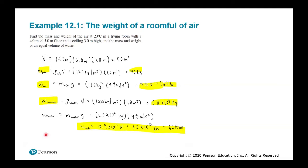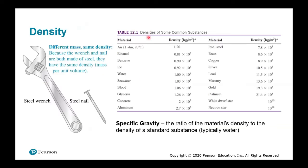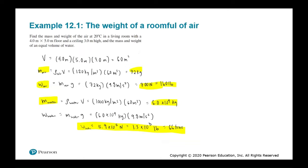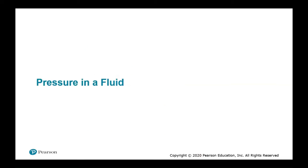This example demonstrates how to use the density table and apply the equation for density of a homogeneous material. Remember, this only applies when the density is the same throughout — meaning it's homogeneous. Now let's talk about pressure in a fluid.